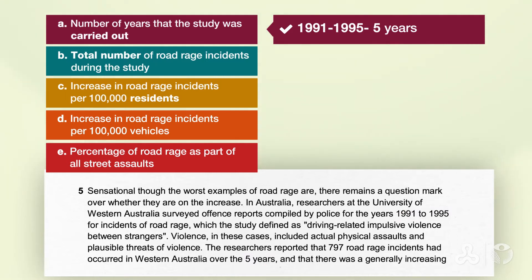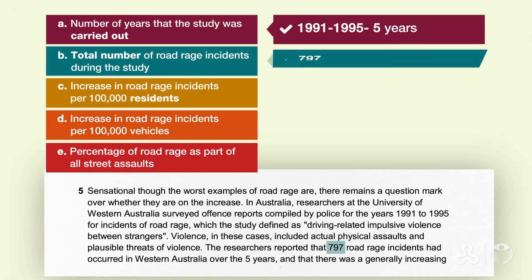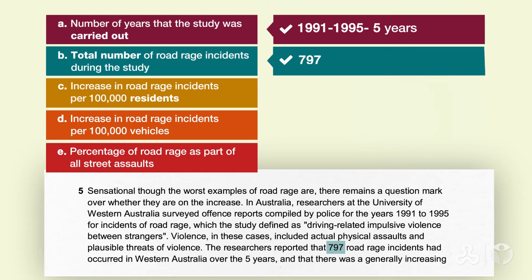Let's look at B now. What was the total number of road rage incidents during the study? It was 797 — the total number of incidents. It's also very easy to scan for because you look for the highest number that appeared in the paragraph.